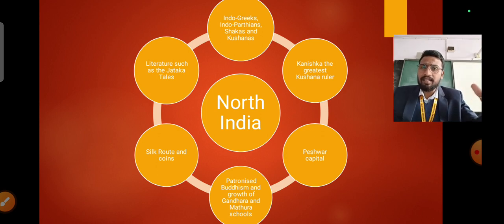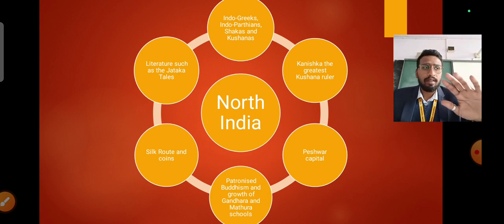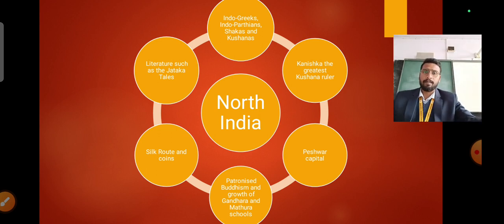Several independent states started coming up and they started fighting within each other and the whole north India was disturbed because of the constant fighting between different independent states. This left a gap in the northwestern side and this gave way to foreign invaders to come and invade India.